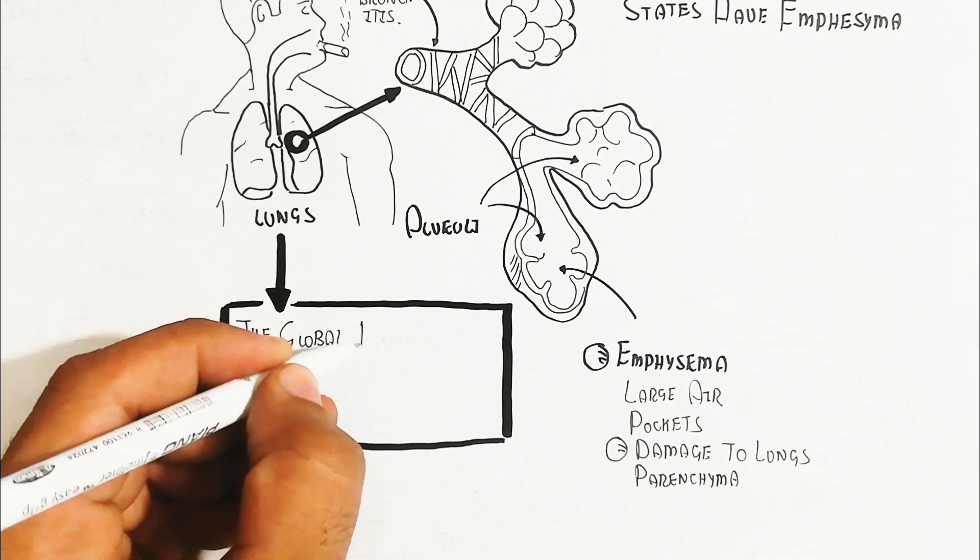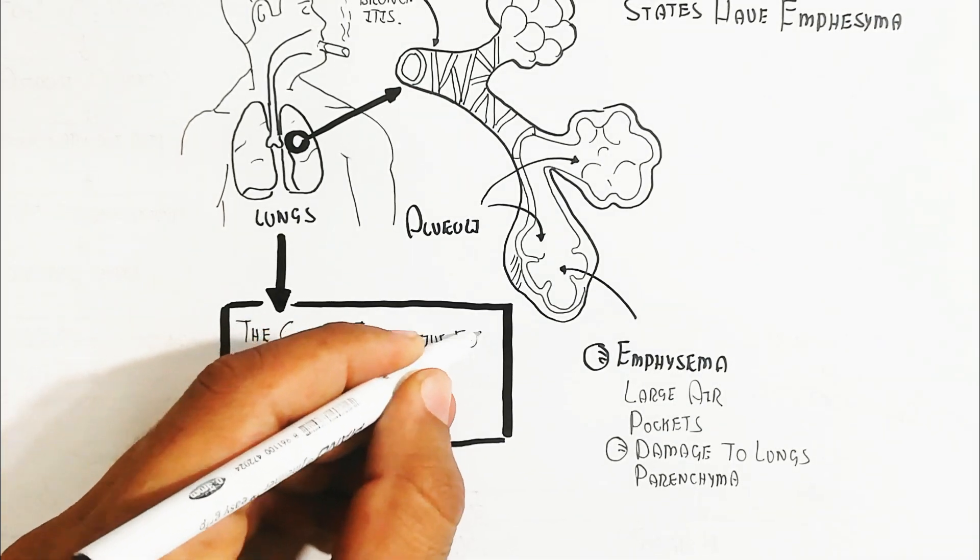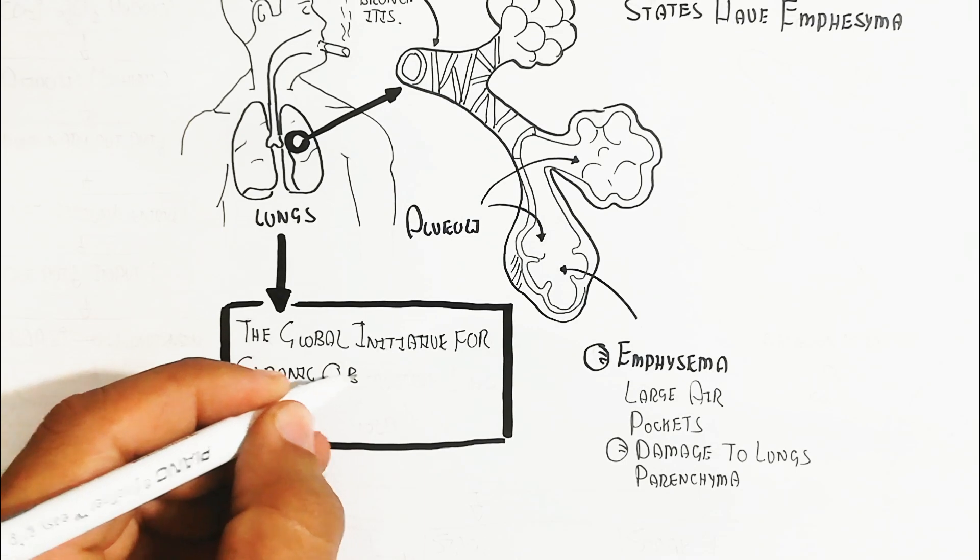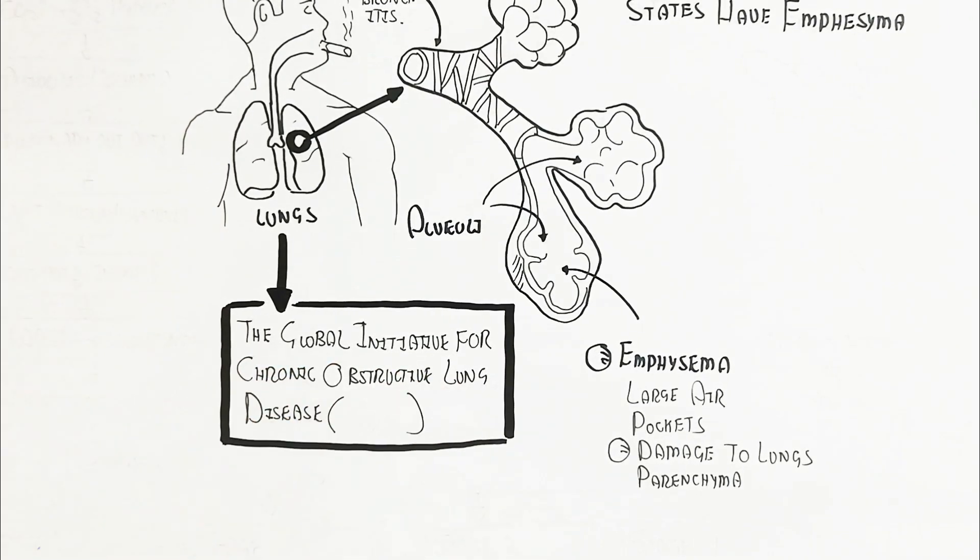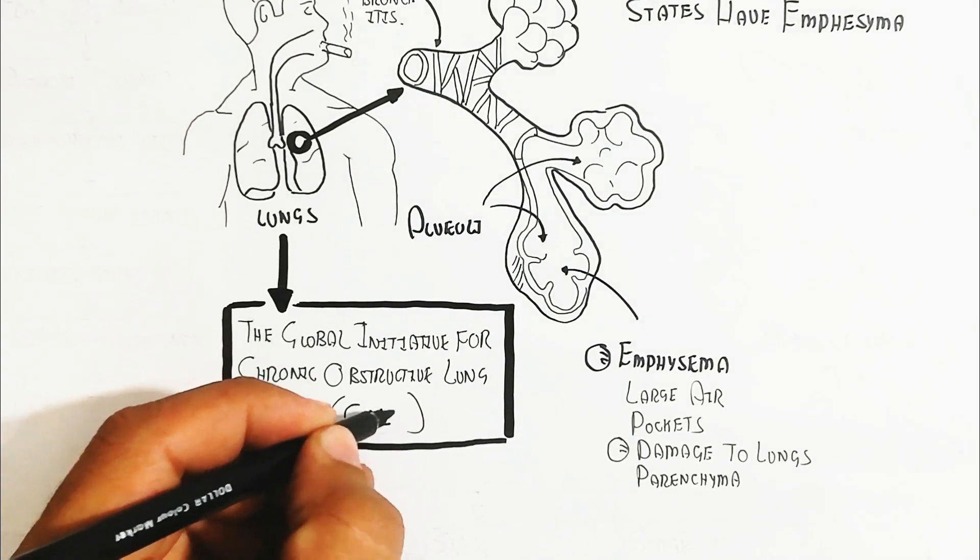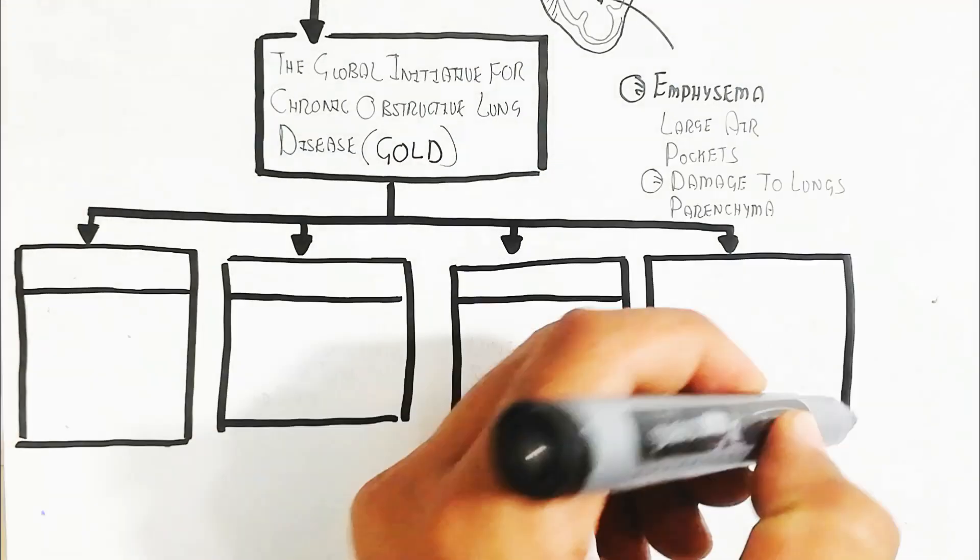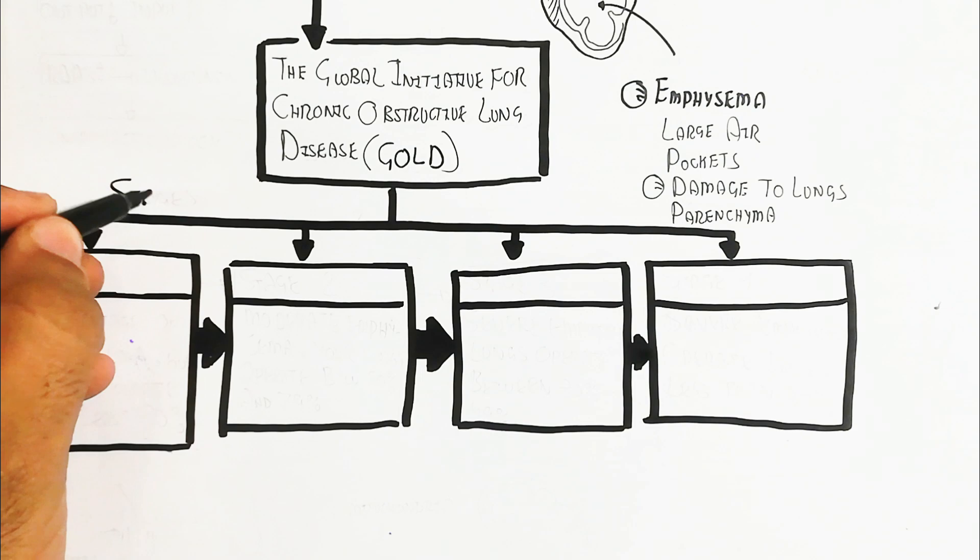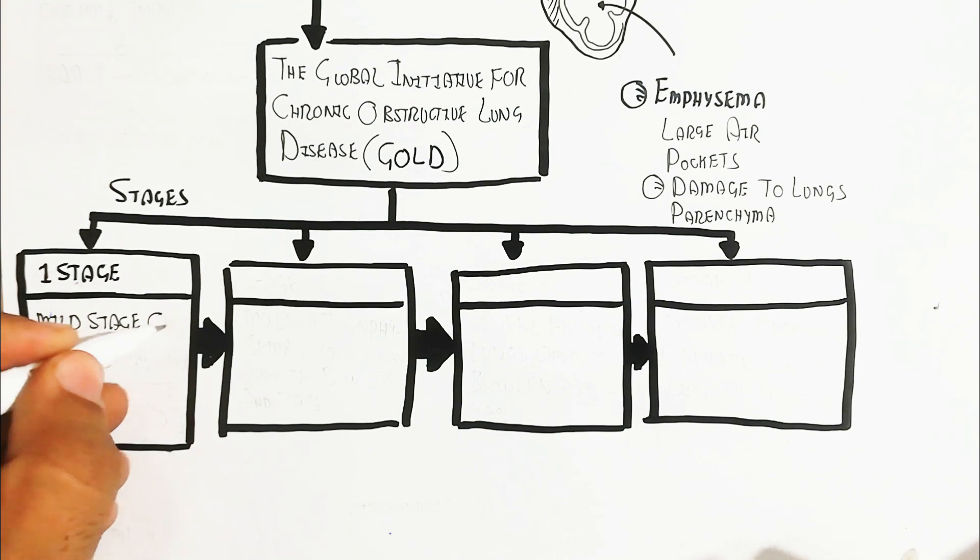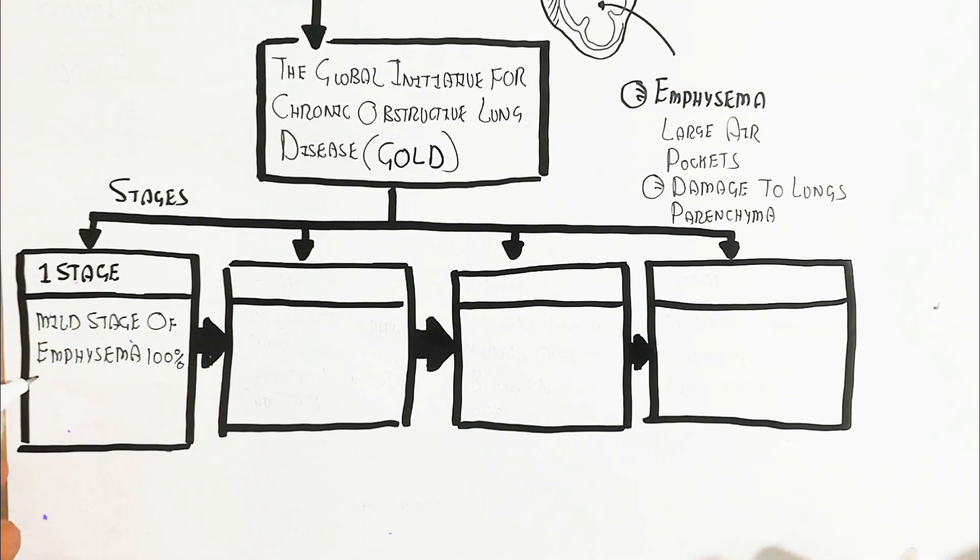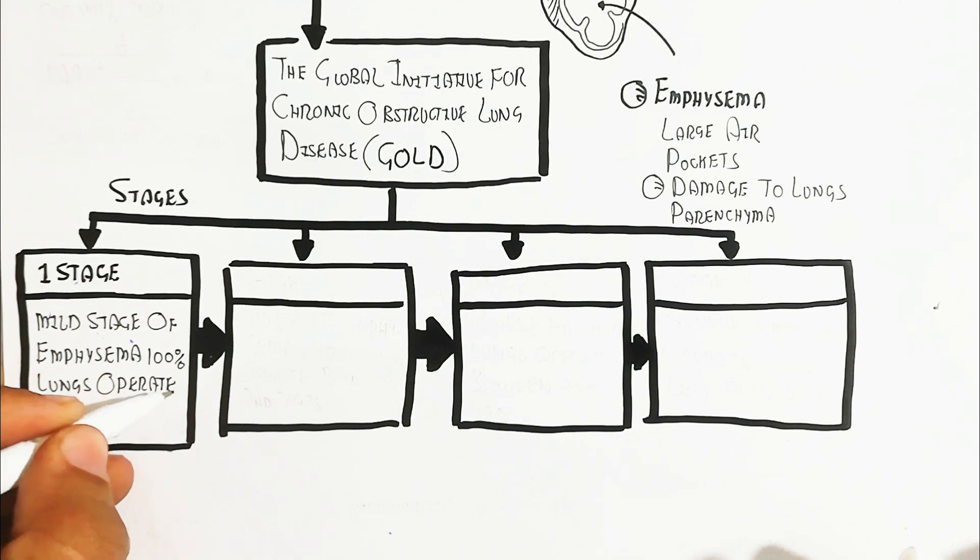The Global Initiative for Chronic Obstructive Lung Disease (GOLD) has four stages. Stage one is mild emphysema where lungs operate at least 80% normally.